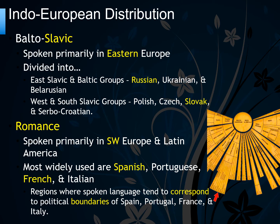The fourth branch of Indo-European you should know is the Romance branch, named because of the Romans. These are languages derived from Latin: Spanish, Portuguese, French, Italian, and Romanian.